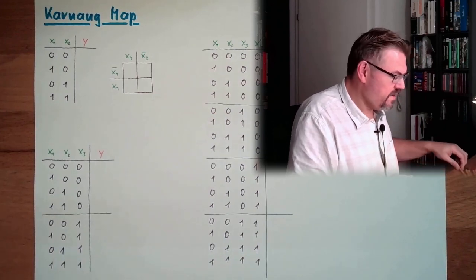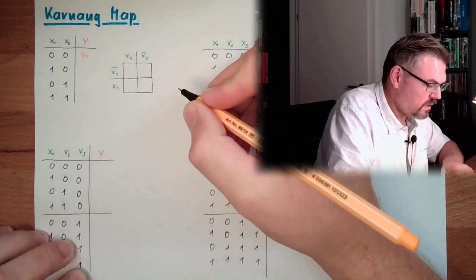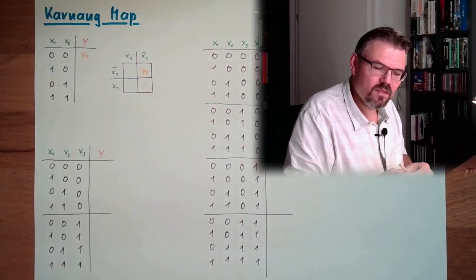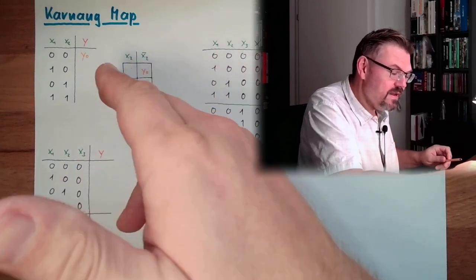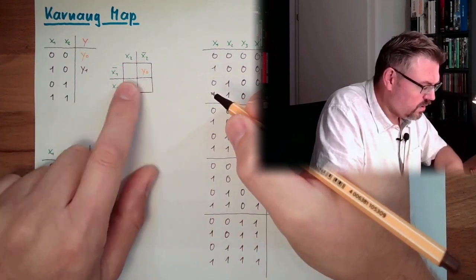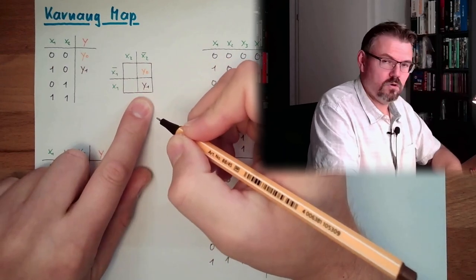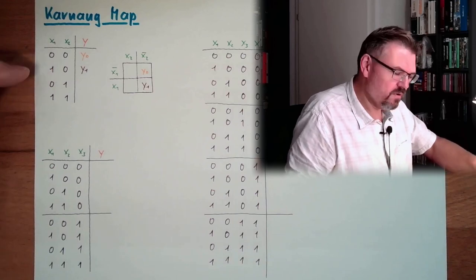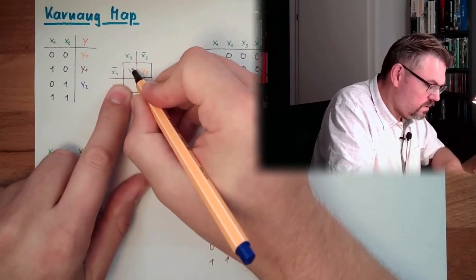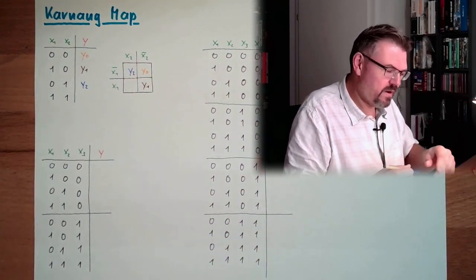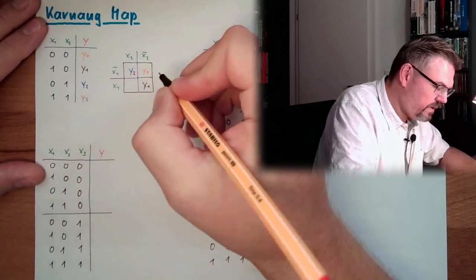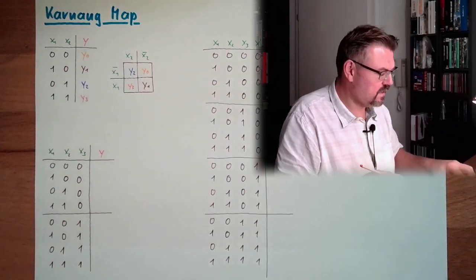And the next, x2, x2 negated in the columns. And then I can map every value. So if here is y0, not x1, not x2, here would be y0. If you select the fields another way, then it will simply be in another field. Here we have y1, x1, not x2. So for each row in the table of truth, there is a field in the Karnaugh map. y2, not x1 and x2. y3, yes, yes, y3. This is the Karnaugh map for two inputs.